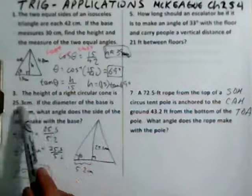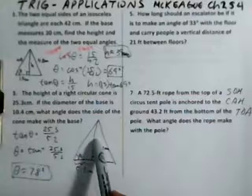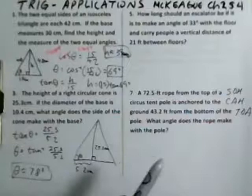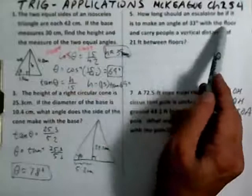According to the information, 25.3 divided by 5.2 — using half of the diameter 10.4 — gives 78 degrees. Number 5: how long should an escalator be if it makes an angle of 33 degrees with the floor and carries people a vertical distance of 21 feet between floors?